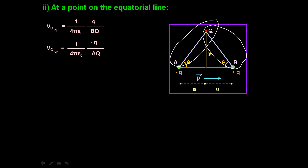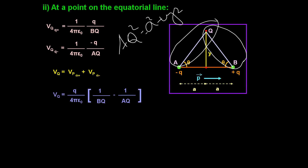Since we can see in the diagram the two triangles are similar triangles, and according to the Pythagorean theorem, the hypotenuse squared equals the base squared plus the altitude squared. For both AQ and BQ: AQ² = a² + y², and BQ² = a² + y², which means distances AQ and BQ are equal. So when you find out the net potential, it will be (1 / 4πε₀) × q × (1/BQ − 1/AQ). But since AQ equals BQ, these terms cancel out.